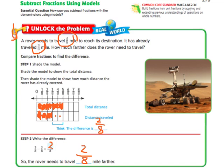So let me just show you this a different way. If you weren't to use the model, if you were just going to write it out, you would say you start with five-eighths and you're subtracting the three-eighths that you've already gone.